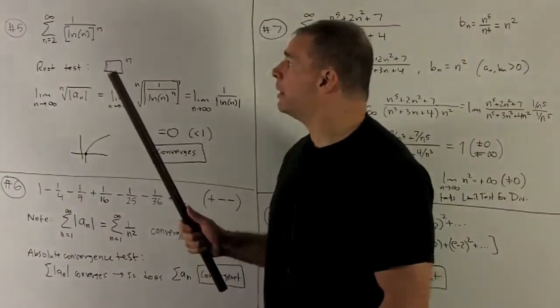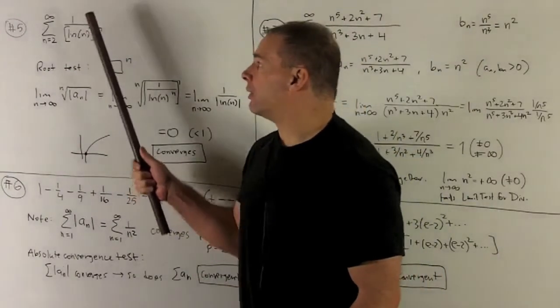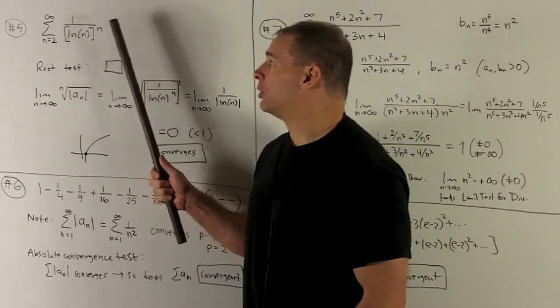Number five, the sum from two to infinity of one over natural log of n, raised to the nth power.